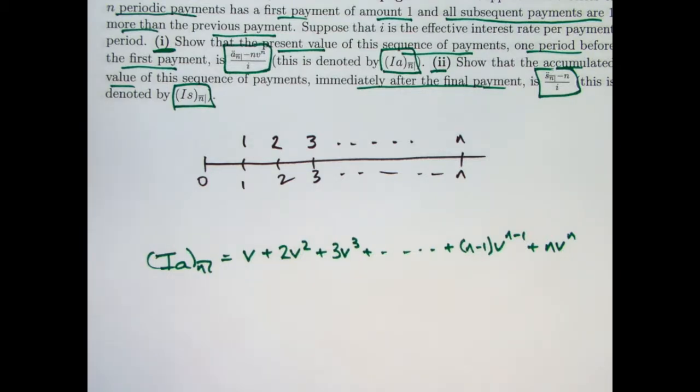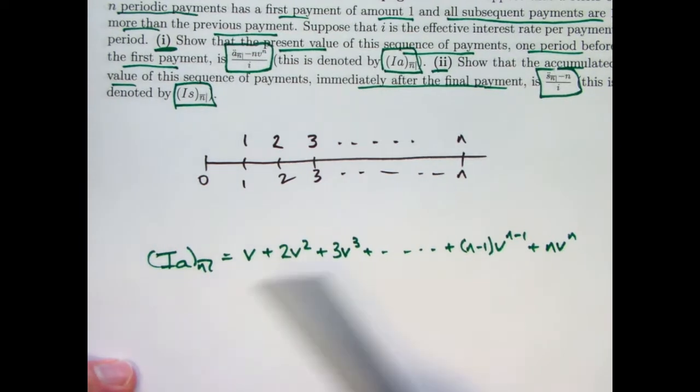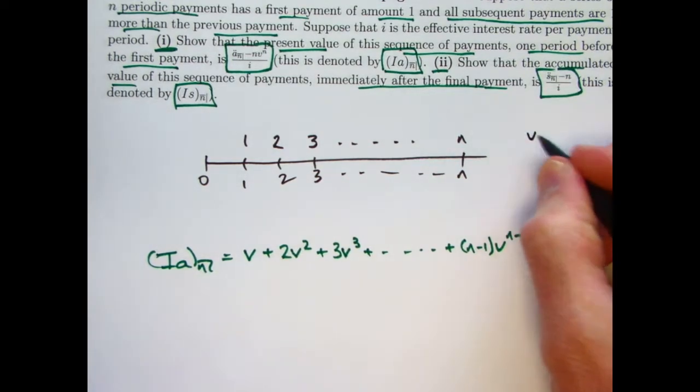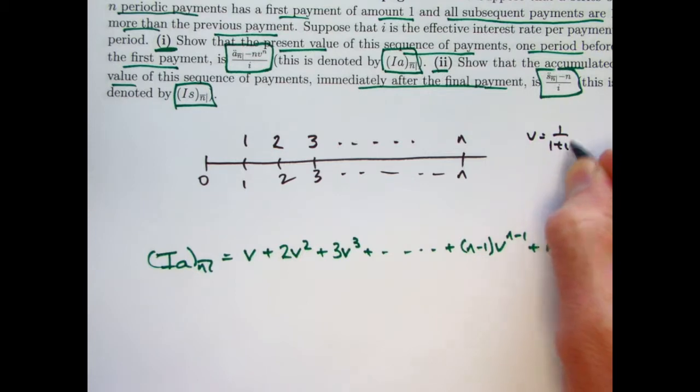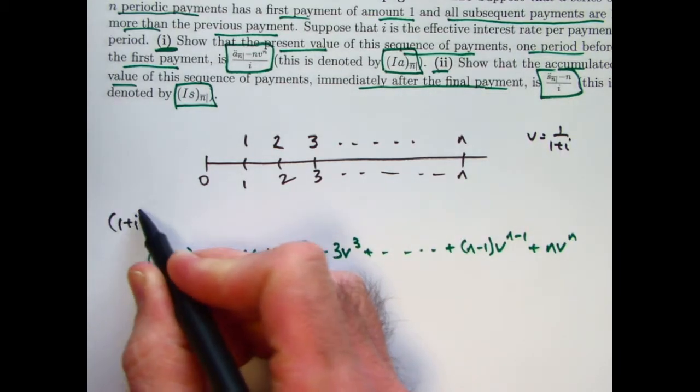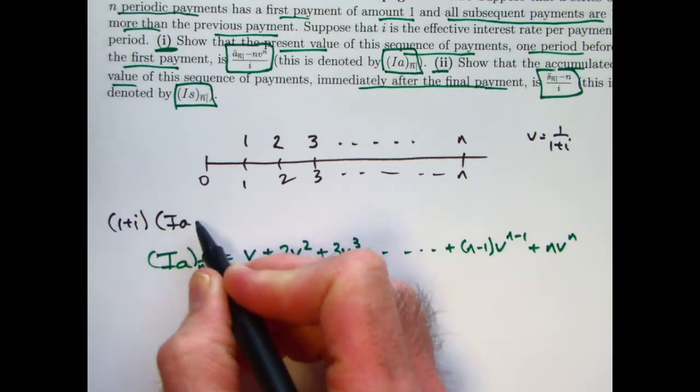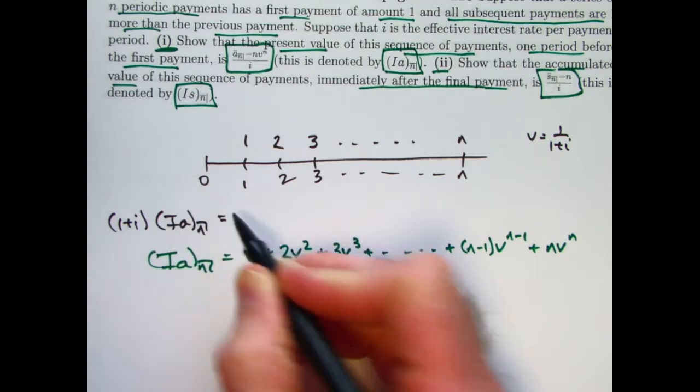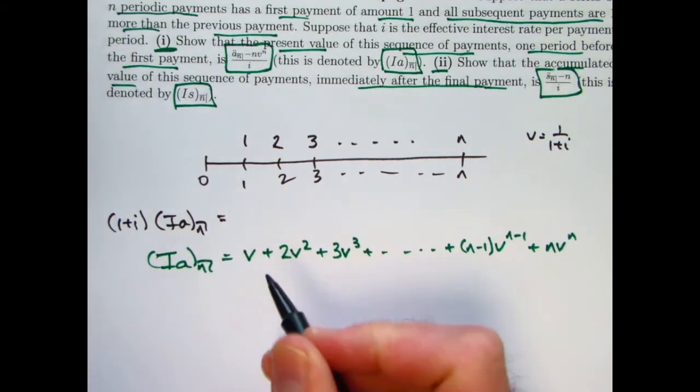Here's the trick. Multiply both sides of this series by 1 plus i. Where again, v is the reciprocal of 1 plus i. Let me put the answer up here. 1 plus i times (Ia)_n.